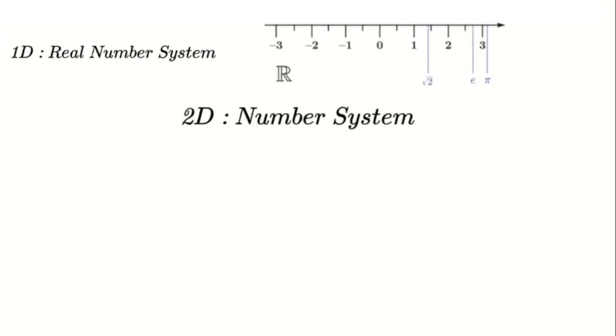Then came the complex number system, a 2D number system. This expanded our understanding of numbers by introducing imaginary numbers using the unit i, which is the square root of negative 1. This system is incredibly powerful for things like electrical engineering and quantum mechanics. However, even with complex numbers, we still run into the same problems with singularities.